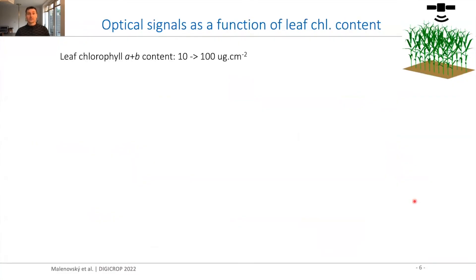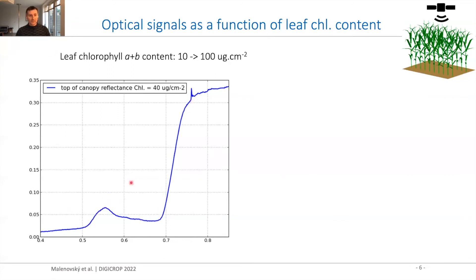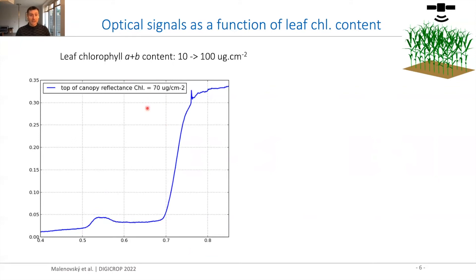I prepared two examples of the optical signals that can be simulated with DART for a simple system of 20 maize plants viewed by the sensor from the nadir viewing angle. The optical signals are simulated as a function of leaf chlorophyll content. We increase leaf chlorophyll content from 10 to 100 micrograms, and simulate the bidirectional reflectance function between 400 and 850 nanometers. You can see that with the increase in chlorophyll content, the absorption of chlorophyll decreases reflection in visible and red-edge wavelengths.